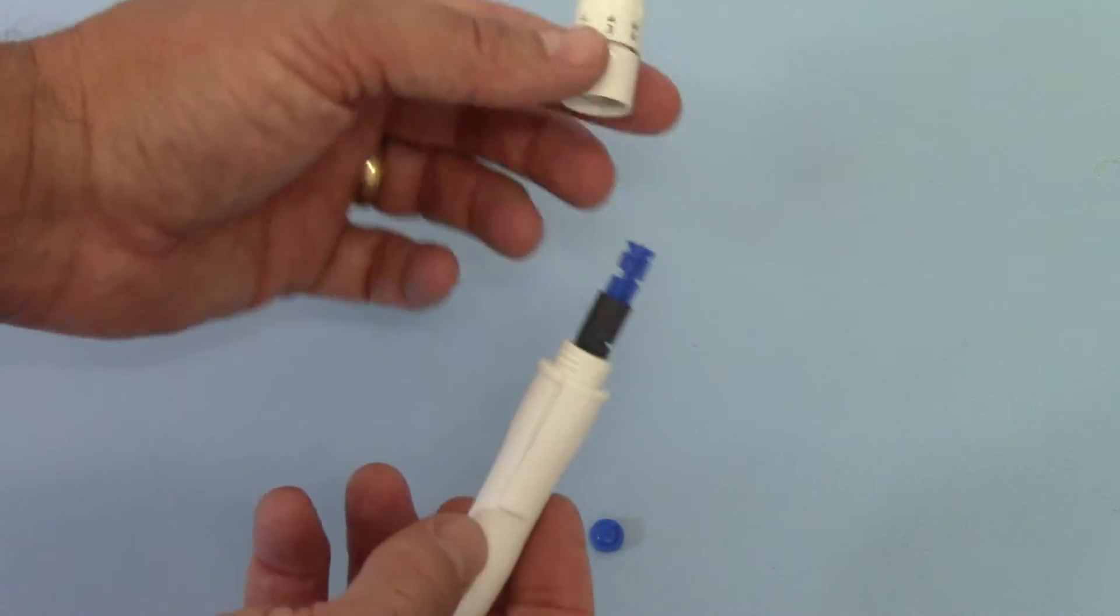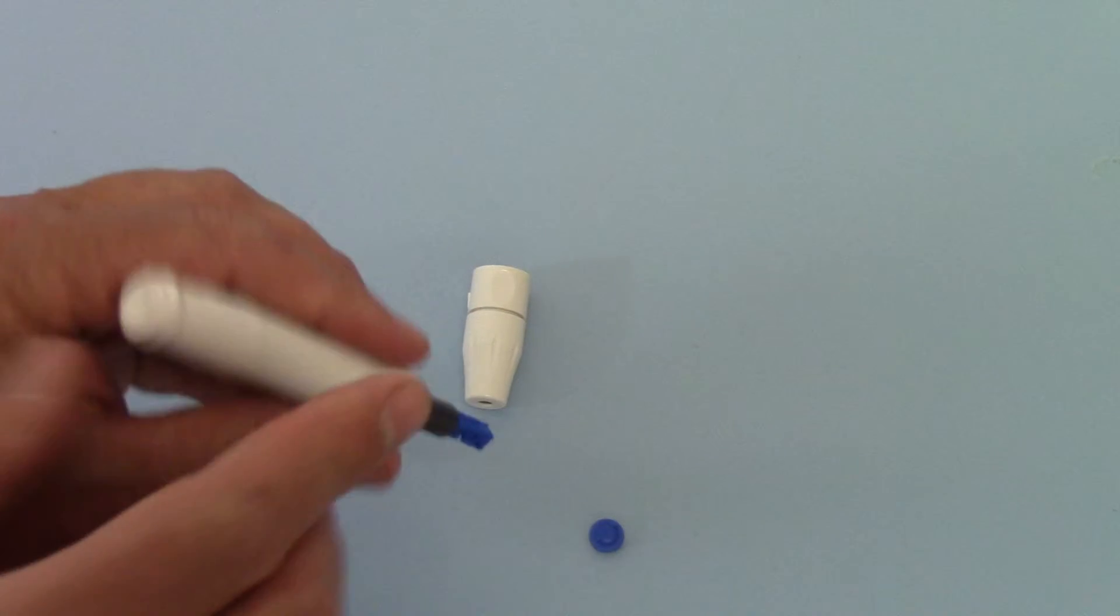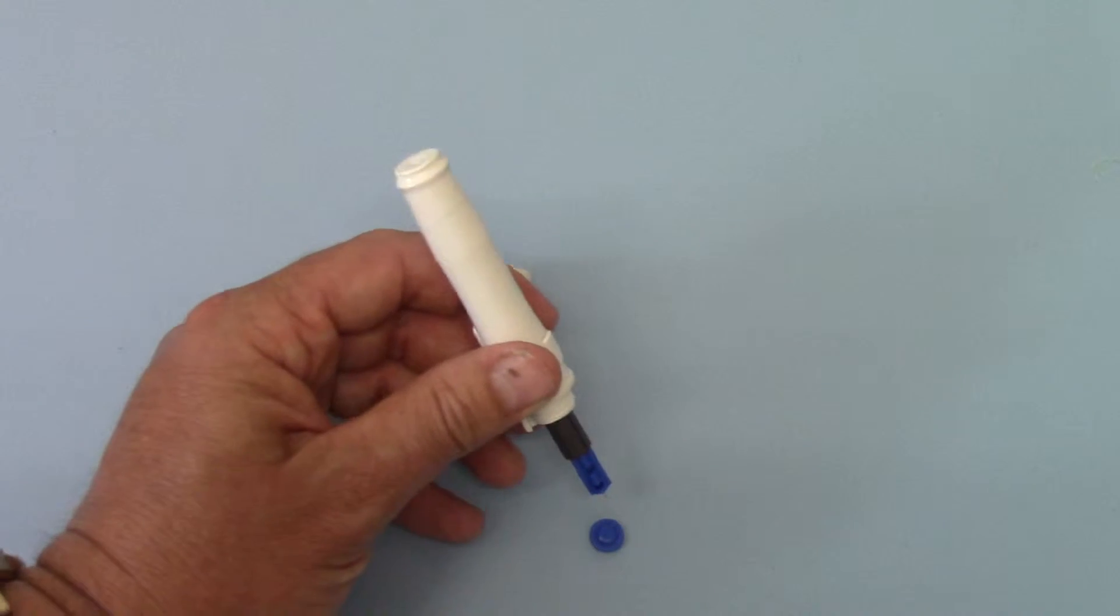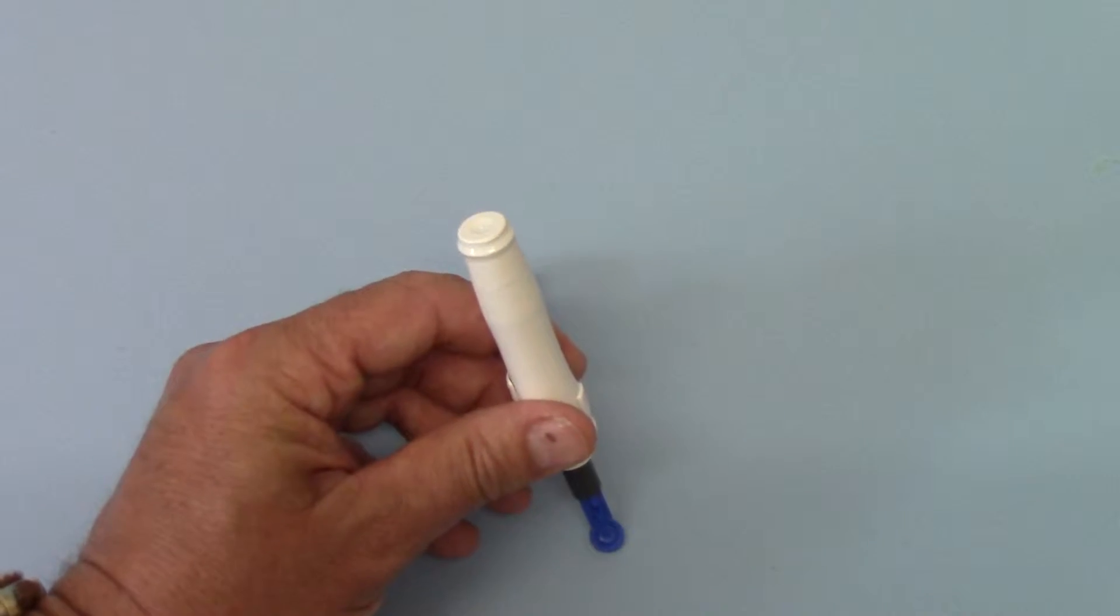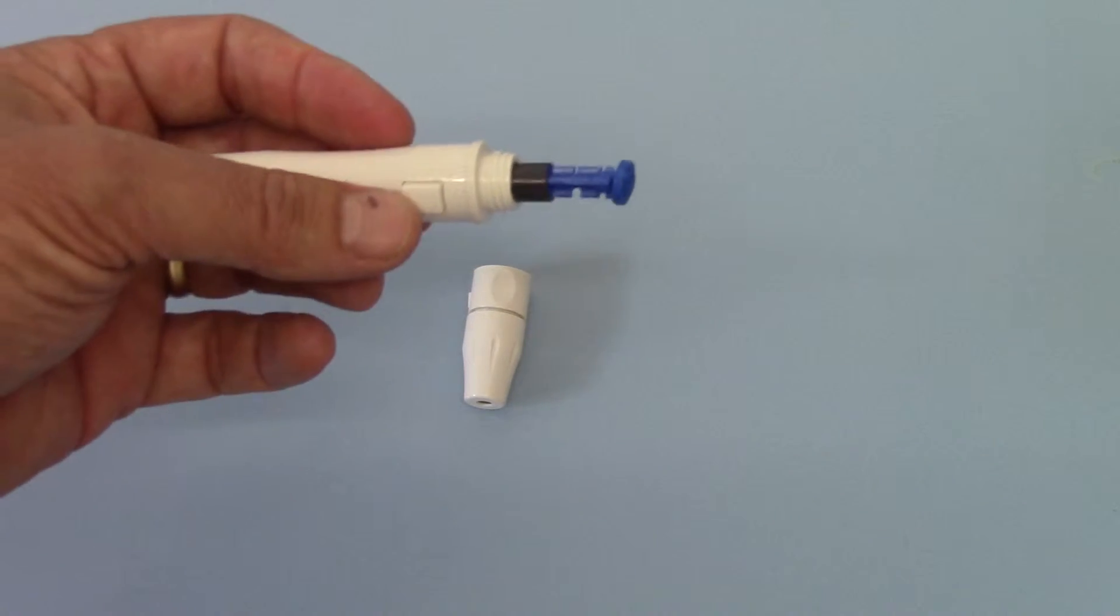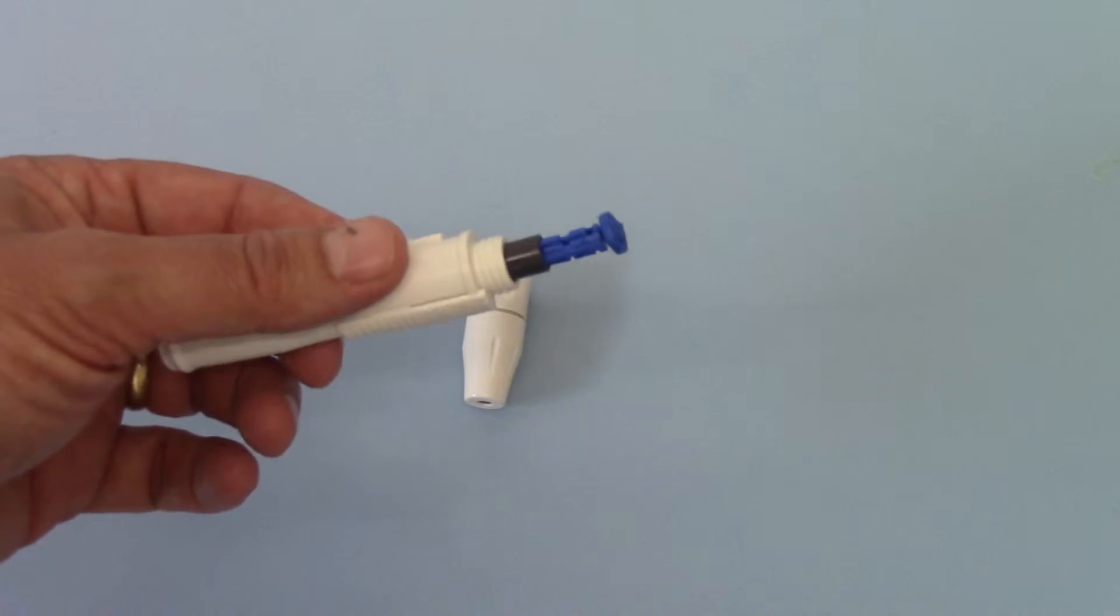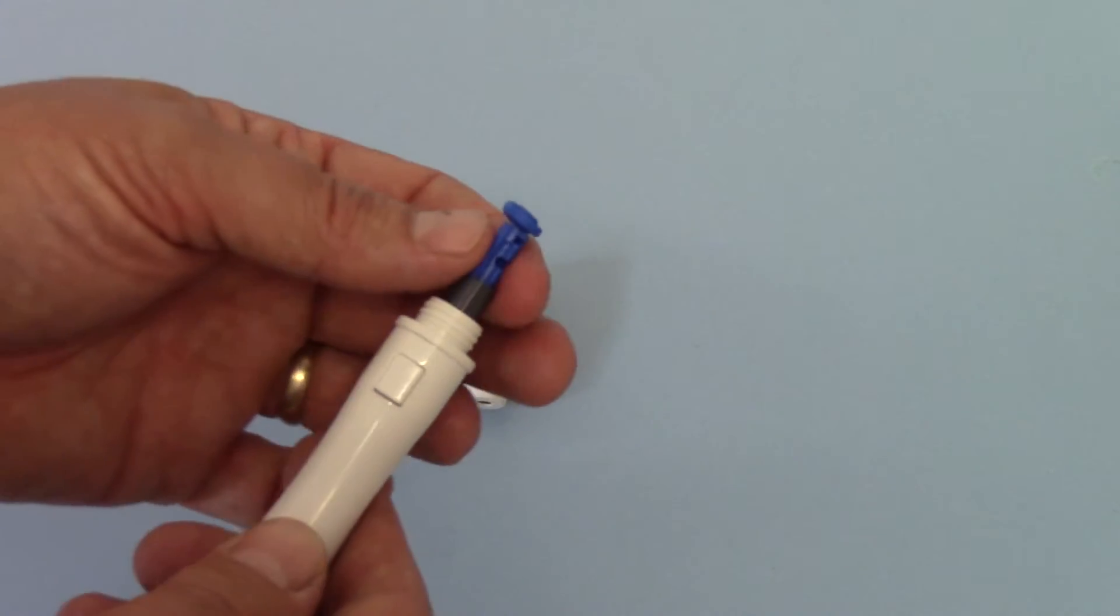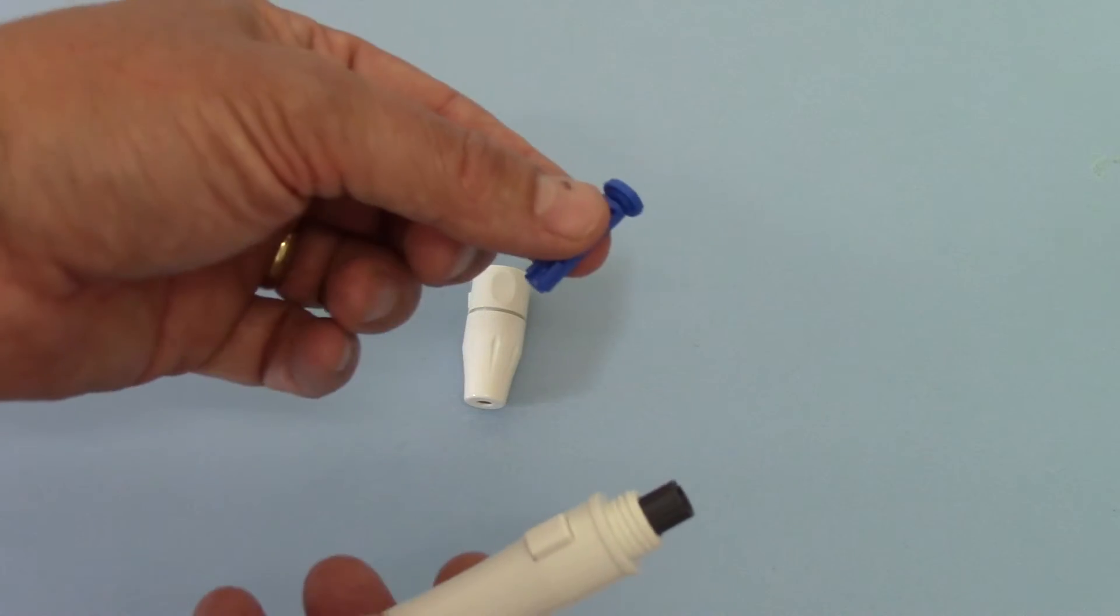When you've done that and wish to remove the lancet, the procedure is simply to push the lancet down into the plastic ring on the base. You'll see that that basically encloses the lance completely, and it's safe then to remove from the device and dispose of.